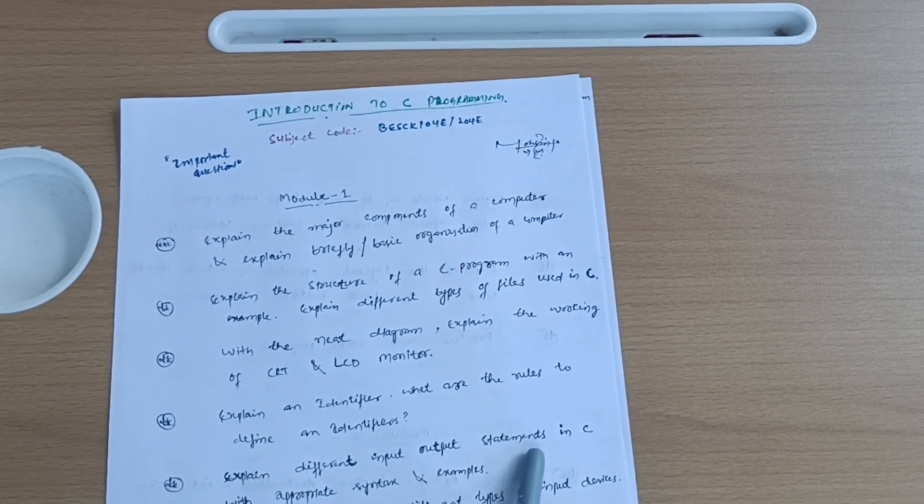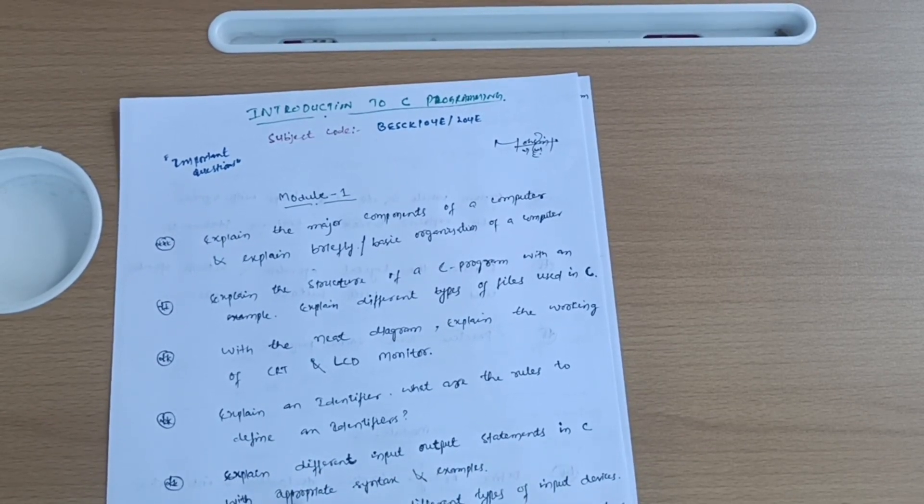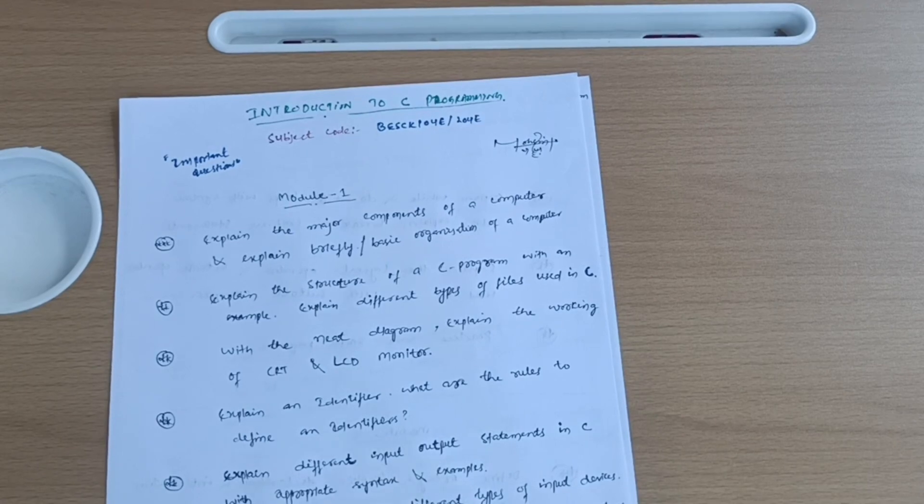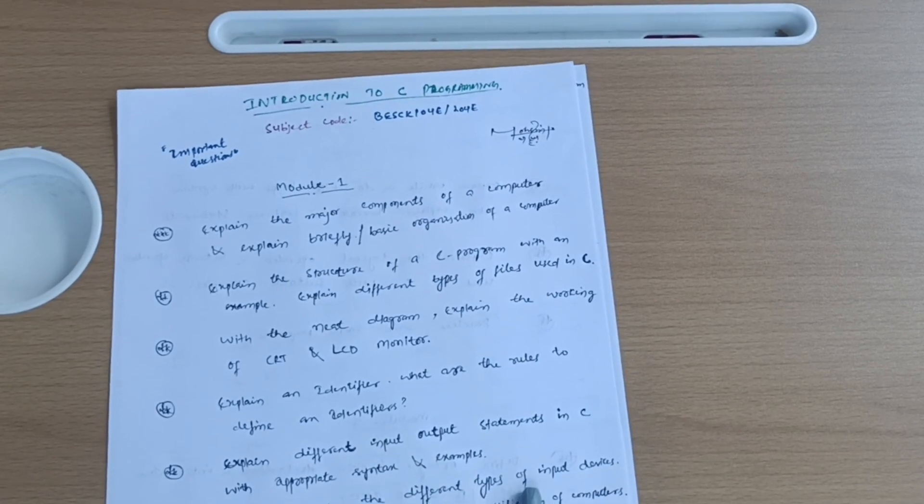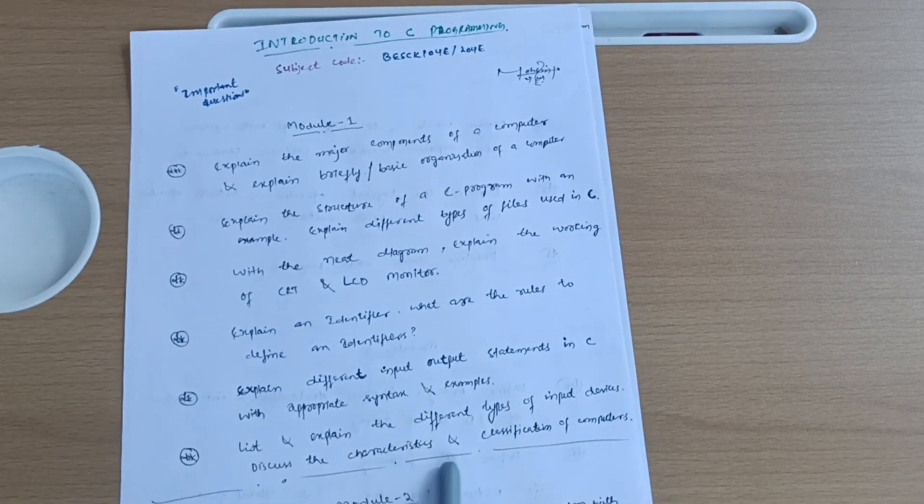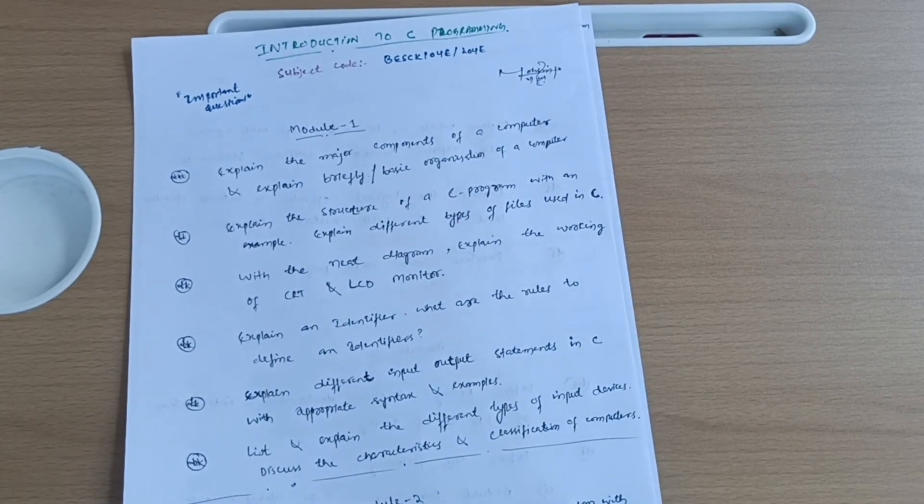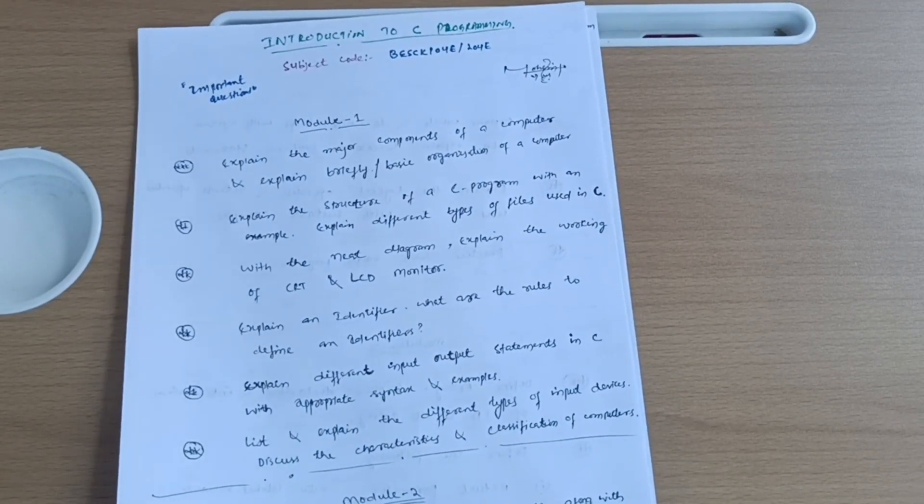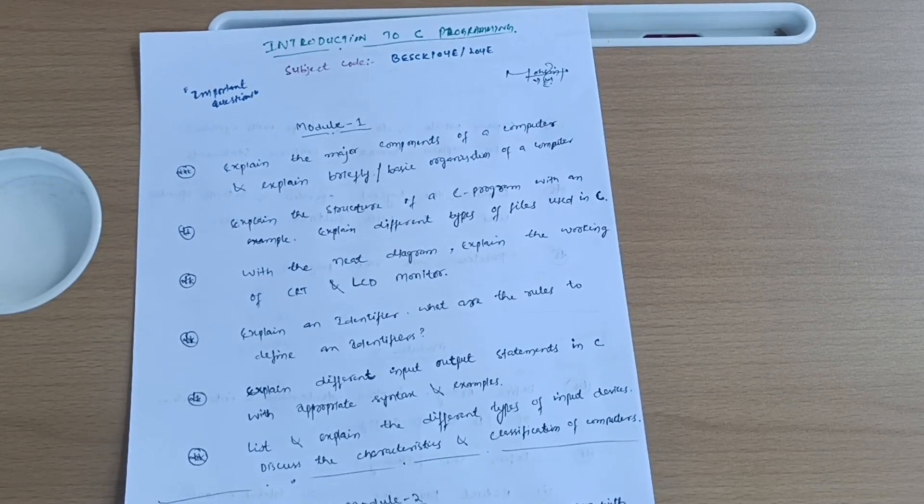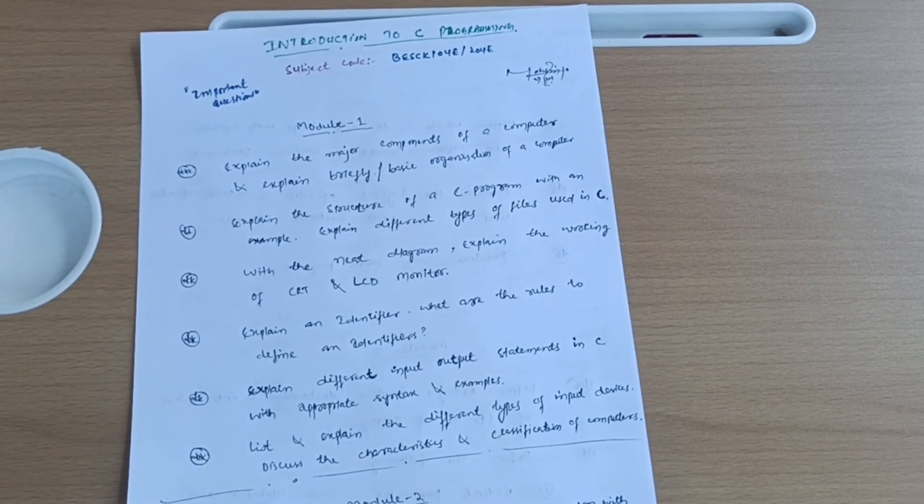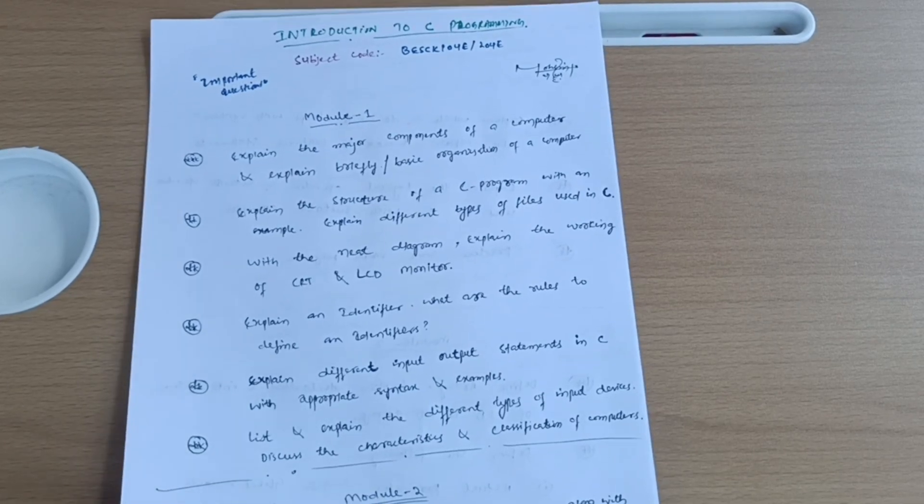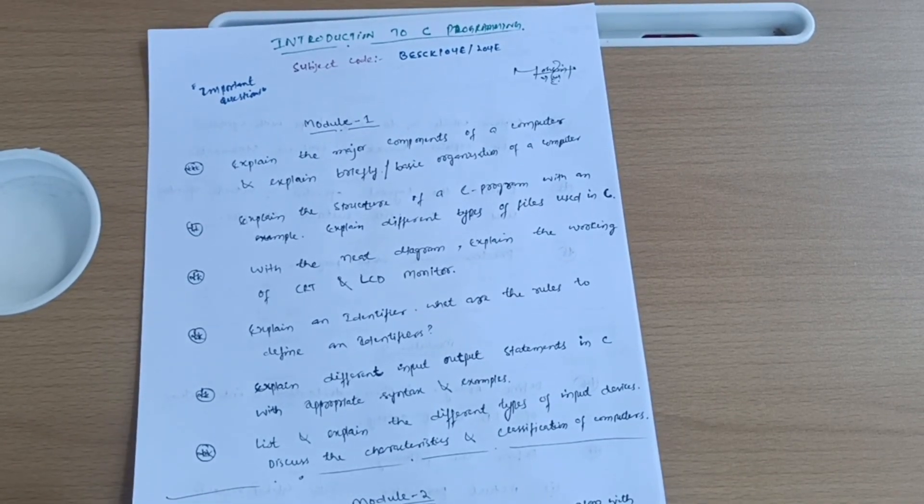Explain an identifier. What are the rules to define an identifier? Next is explain different input output statements in C with appropriate syntax and examples. List and explain the different types of input devices. Discuss the characteristics and classification of computers. This is the theoretical module, which I call the passing module. You should not leave anything from module first. If you are weak in the programmatic part, better to go for the theoretical portions itself so that you can acquire at least 15 marks from module first.